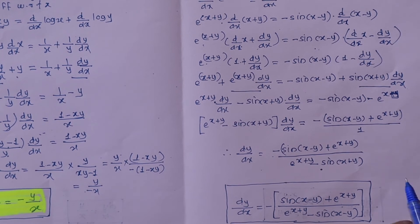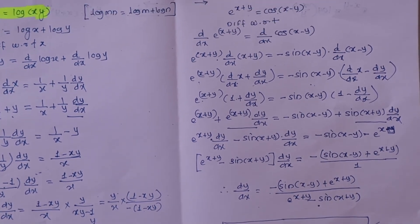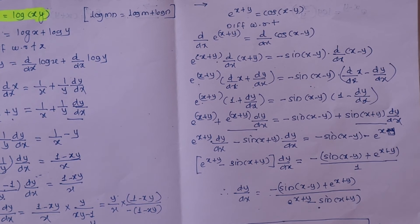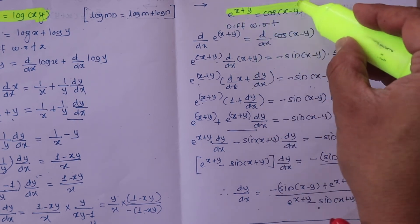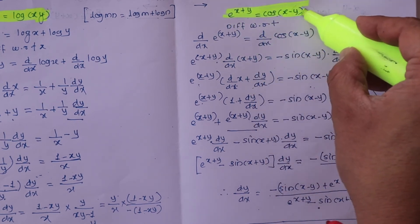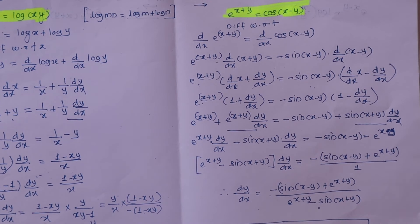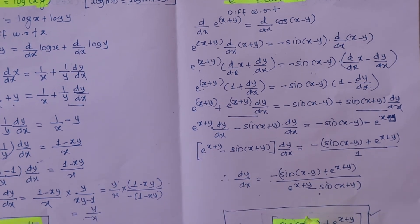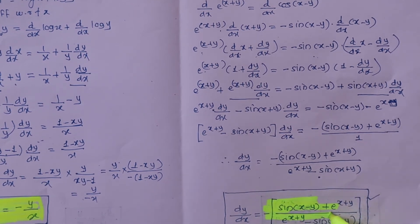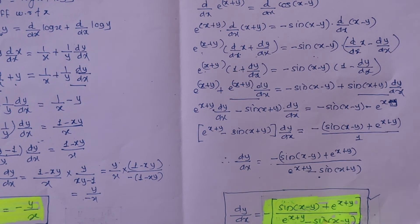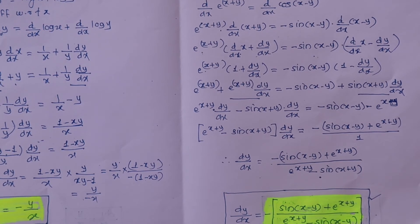Therefore dy/dx equals the simplified expression. This can be rewritten, and lastly it can be written in final form. So friends, this is the derivative of e raised to (x plus y) equals cos(x minus y). This is the answer.